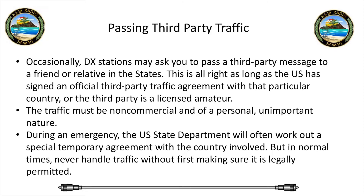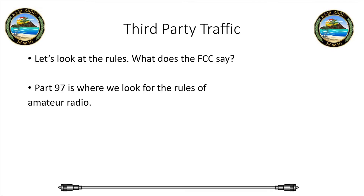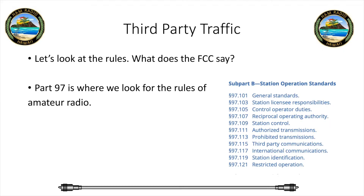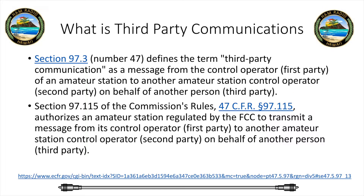So what authorizes us to do this? Well, let's look at the rules. The FCC publishes Part 97 for amateur radio operators, and that's what we're going to look at. Under Part 97, if we look at 97.115 under third-party communications, it'll tell us all we need to know. It can be confusing, so I would encourage you to get out and read that — it's only a couple paragraphs long.